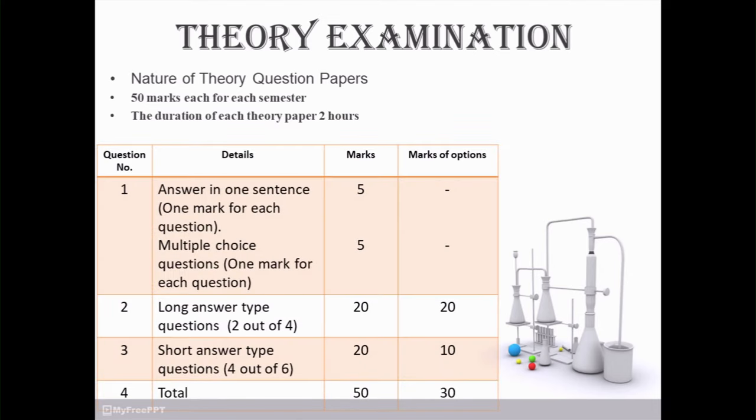Now check question number 1. It consists of two sections: answer in one sentence and multiple choice questions. The weightage for these two is 5 plus 5, equals 10. Question number 1 consists of total 10 marks and all are compulsory, so marks of options is nil.